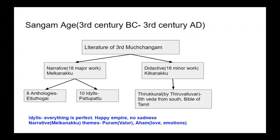Idils were poems where everything is perfect — the empire is happy and there is no sadness. Regarding narrative work or Mel Kanakku, the themes were Puram and Aham: Puram represents valor, and Aham represents love or emotion. In the didactic work or Kil Kanakku, the content is related to code of conduct — how society should live and what conduct should be followed by an individual in the Sangam age.